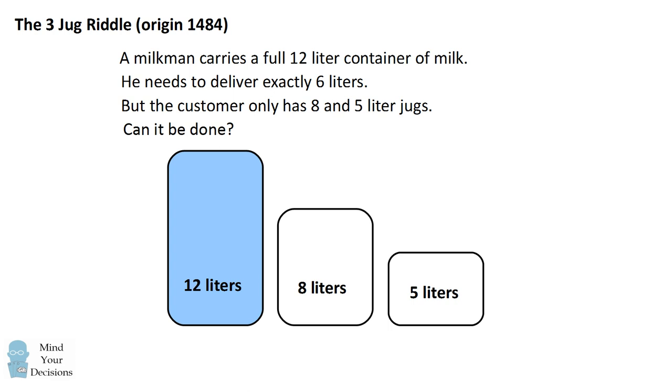The story goes this problem was asked to a school child in France around the late 1700s. He was so interested in the problem that he went on to pursue mathematics. This child was named Poisson, and he's made many contributions to statistics.